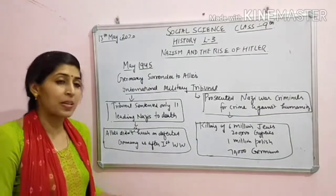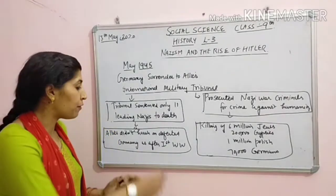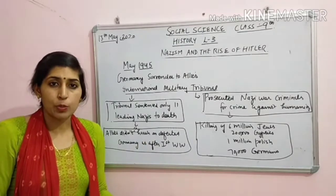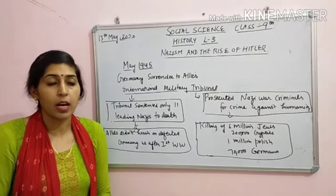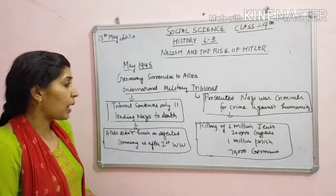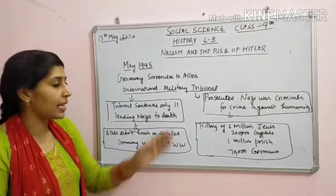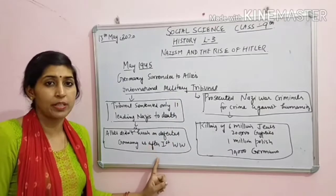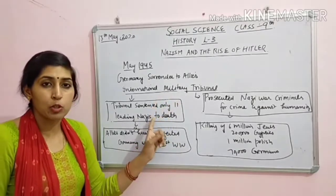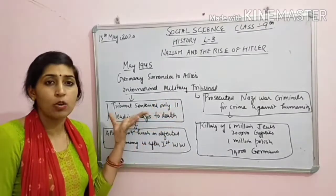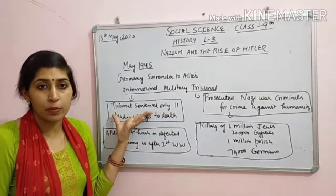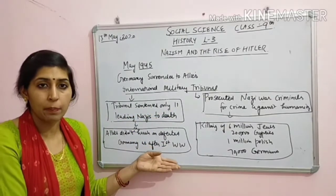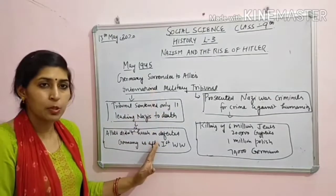Yahaan pe suspense create ho raha hai ki First World War ke baad bhi Germany ko punishment mili thi, aur woh punishment kya thi, abhi hum aage padhengi. Abhi hum itna hi samjhe ki Second World War mein bhi Germany haara hai, First World War mein bhi Germany haara hai. Second World War ke baad jo punishment mili - 11 Nazis ko death ki punishment mili. Aur First World War ke baad jo punishment mili, woh hum aage padhengi.